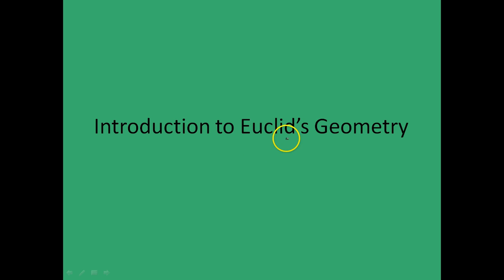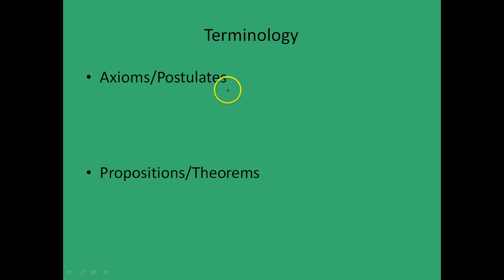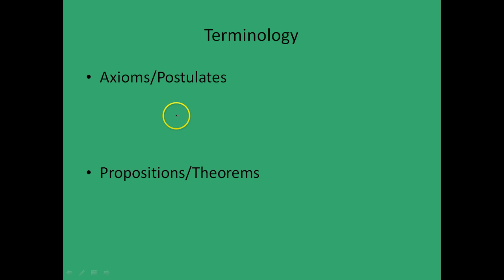Before we dive into Euclid's Geometry, let's look at some terminologies commonly used in mathematics. Axioms or postulates refer to statements which are assumed to be true without proof — these are self-evident or universal truths which require no proof. Propositions and theorems are statements which are later proved using deductive reasoning, along with axioms and postulates that have been stated earlier.